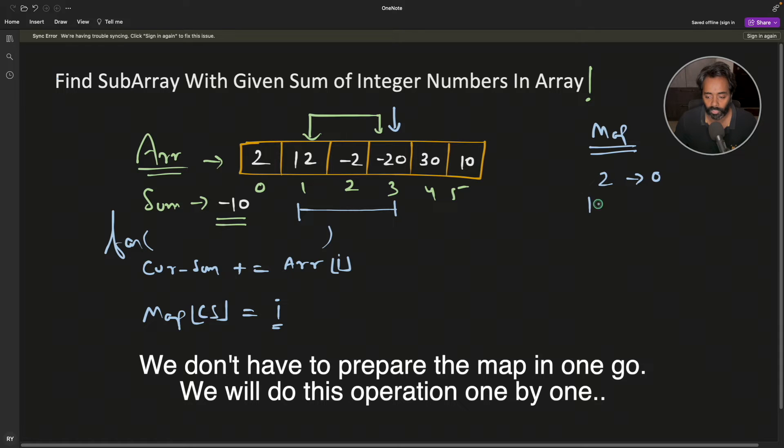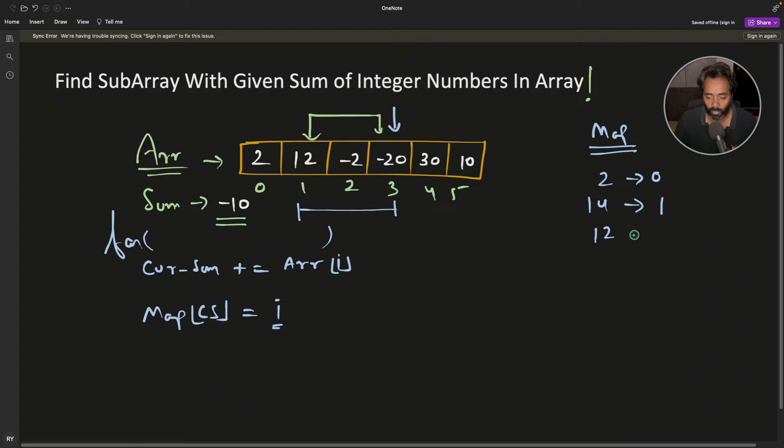Then addition of all 3, so that is going to be 12 and index is going to be 2. So we have prepared this. It's very clear we were just consecutively adding all the subsequent numbers and creating this map. Now the catch is we are going to use the technique that I told you.